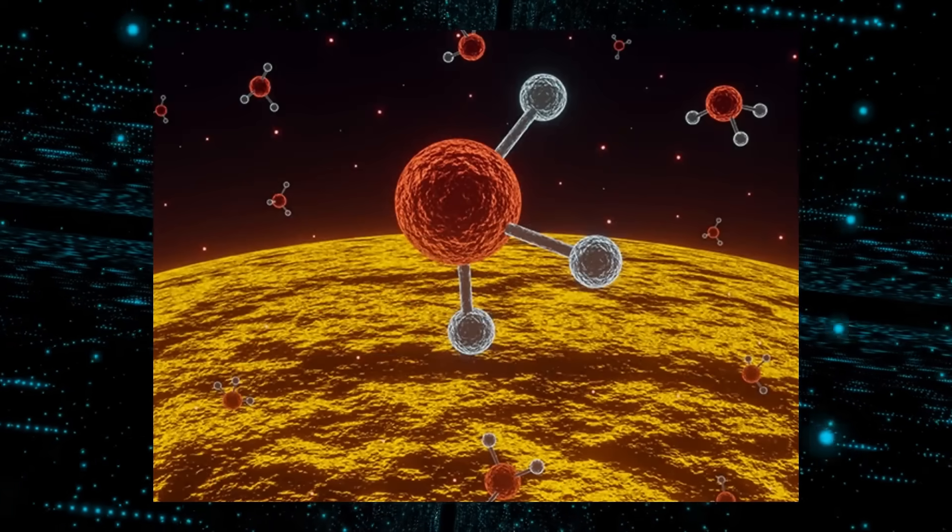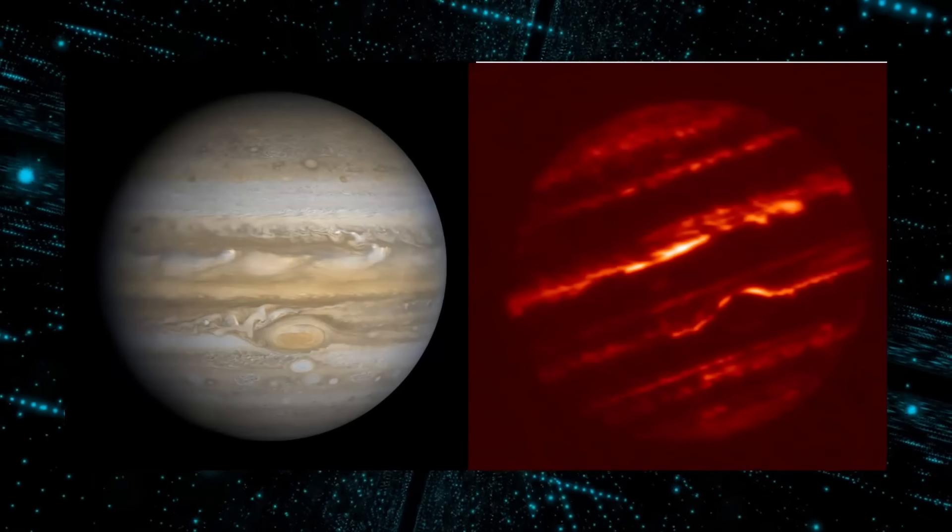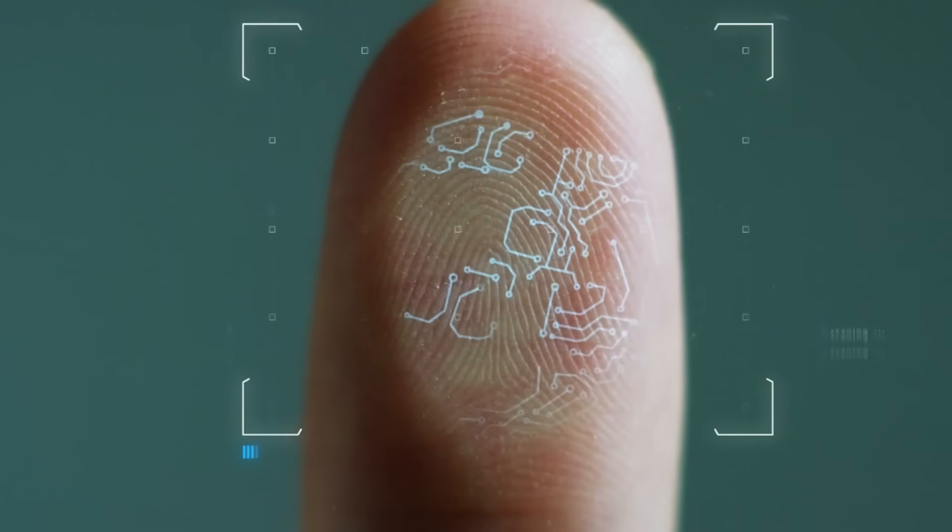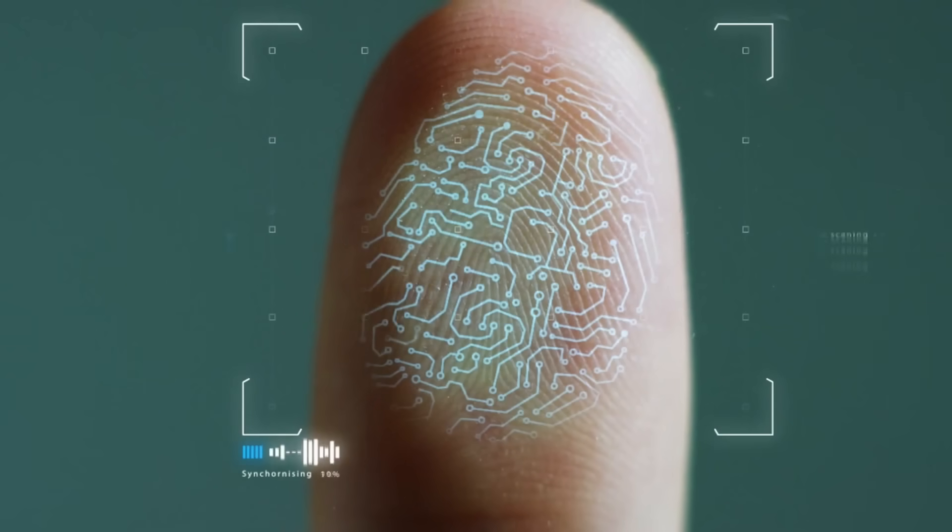Atoms and molecules have distinctive patterns of wavelengths that they absorb, similar to how people have distinguishable fingerprints and DNA sequences.